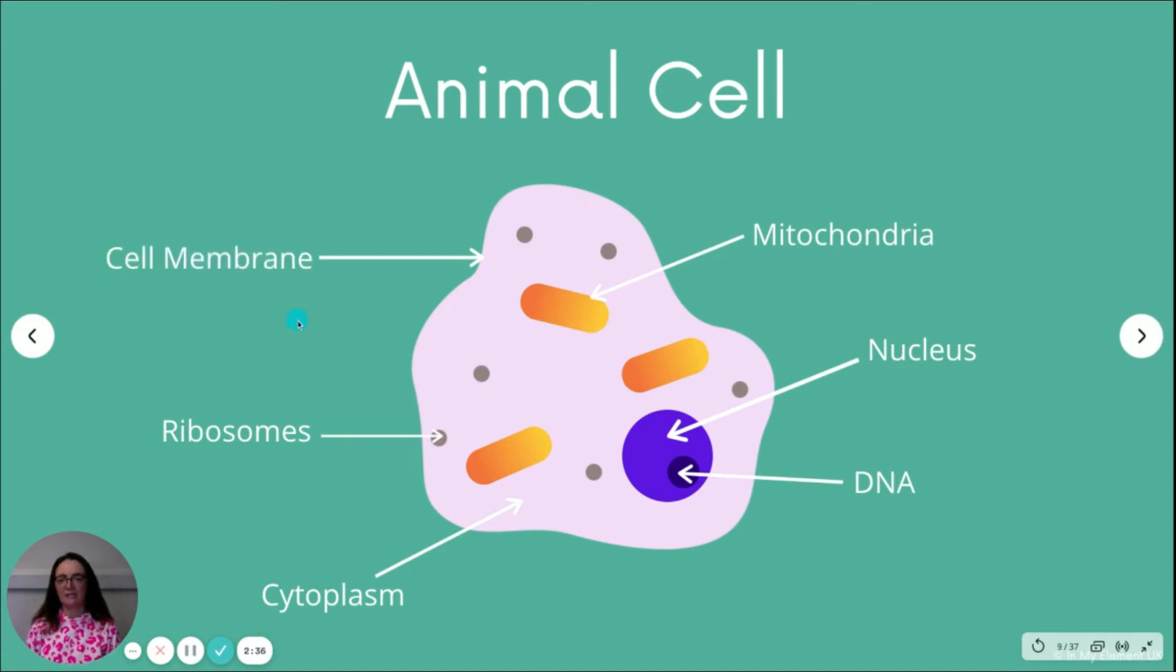And then finally you've got your cell membrane. That is the outside, the edge of the cell, and that controls what goes in and out of the cell. And as you can see from this general animal cell, it gives it a very vague shape but very loose shape.